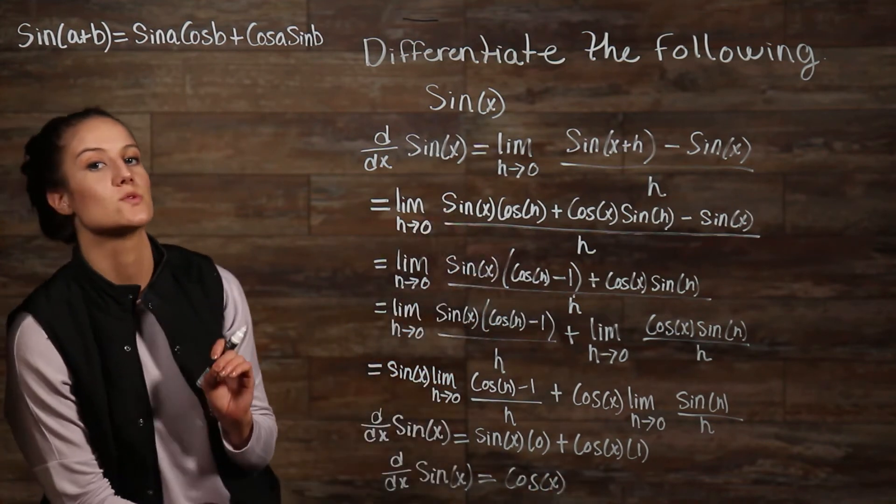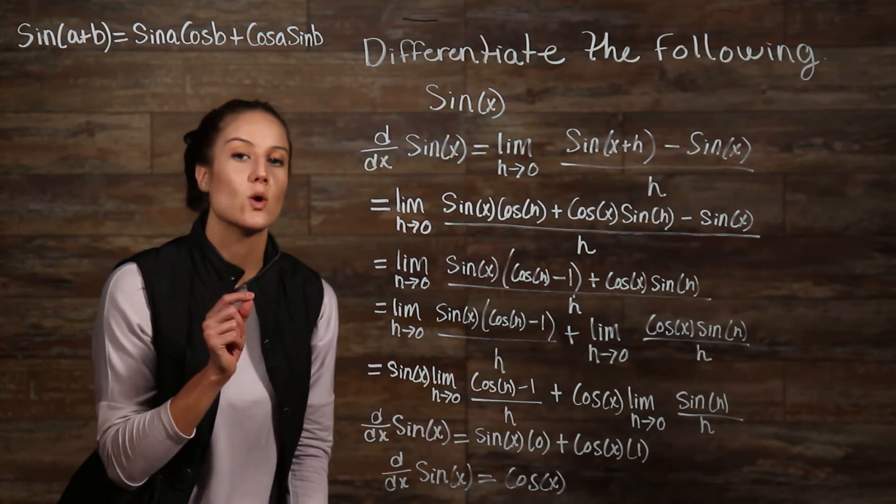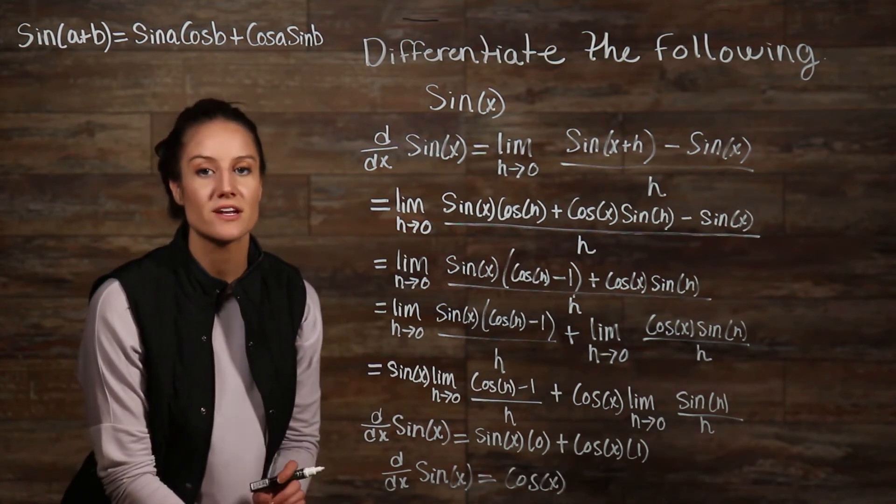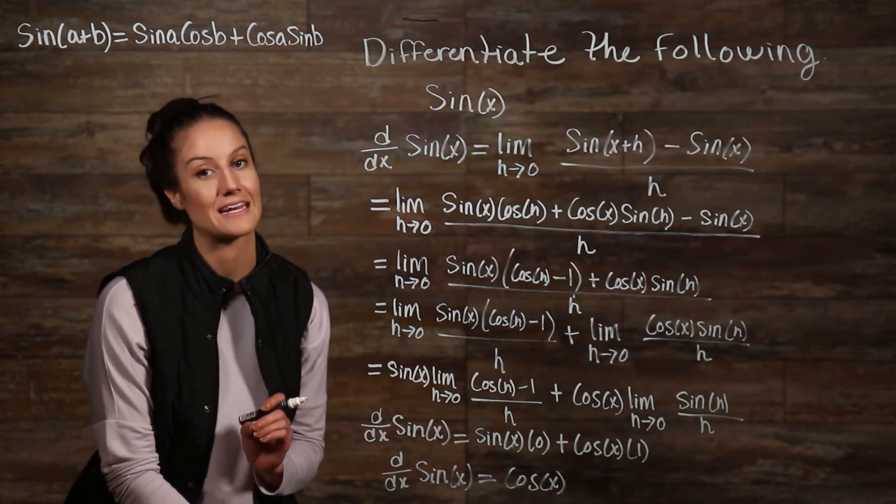To differentiate cosine, you would use a very similar method. The only difference is, you will need to use a different trig formula. Once you differentiate, you will get the derivative of cosine of x is equal to negative sine of x.